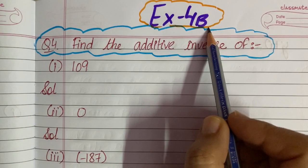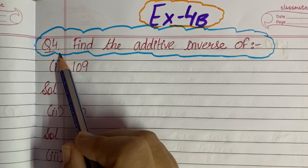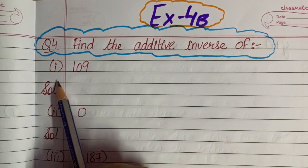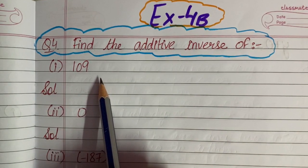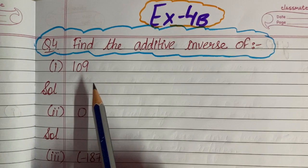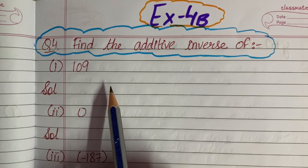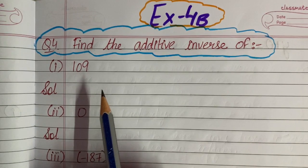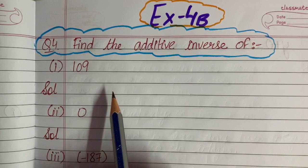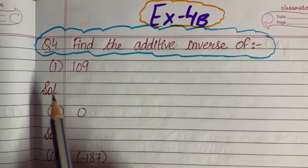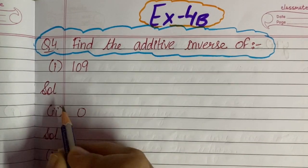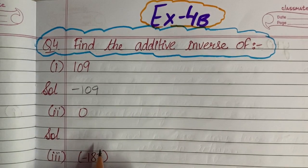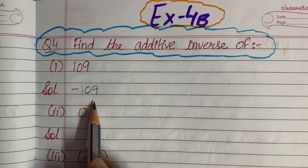Exercise 4b, question number 4 says: find the additive inverse. The first part is 109. As you know, when the number is positive its additive inverse is negative, and when the number is negative its additive inverse is positive. So the additive inverse of 109 will be minus 109.